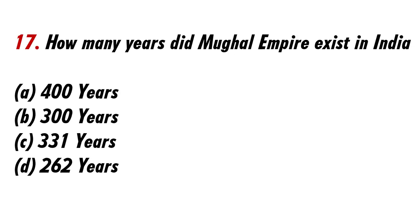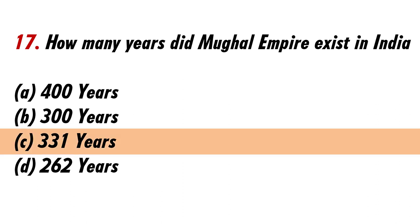How many years did the Mughal Empire exist in India? Answer C: 331 years.